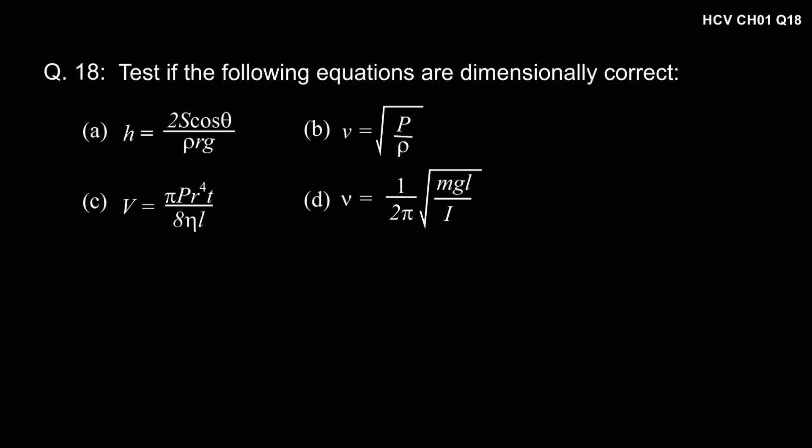What we have to do in this question is to find out the dimension of the quantity on the left-hand side and the quantity on the right-hand side. If the dimensions of both quantities are equal, then the equation is dimensionally correct. If not, the equation is dimensionally incorrect.